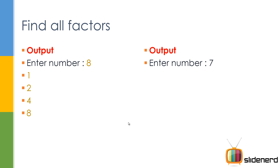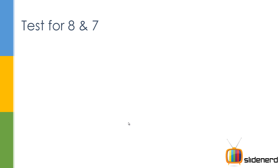If you have a number like 7, there are only two factors: 1 and 7. So it's a prime number, basically there are only two factors. So let's go ahead and see how we test it for 8 and 7.